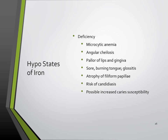Iron deficiency is way more common. In early stages it presents as microcytic anemia. In dental hygiene, we see angular cheilosis, pallor of the lips and gingiva, a sore and burning tongue through glossitis, atrophy of the filiform papillae, a risk of candidiasis, and a possible increased caries susceptibility.